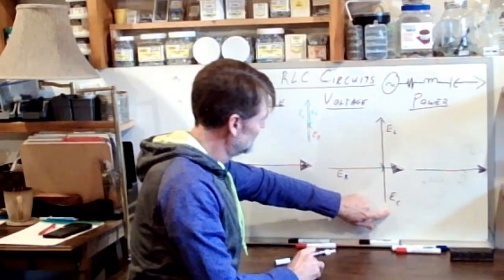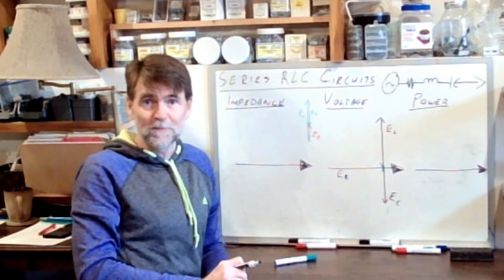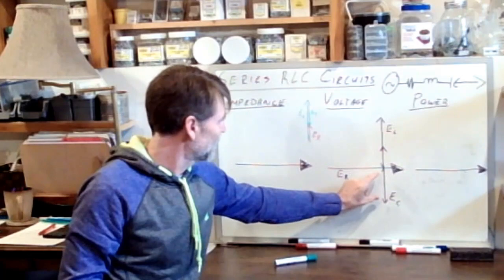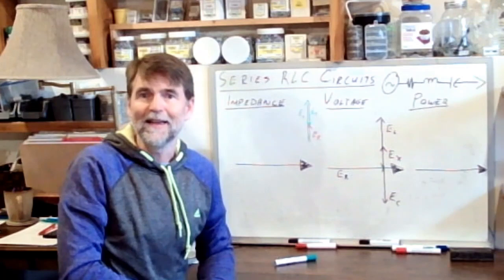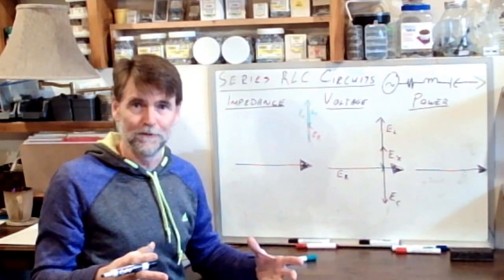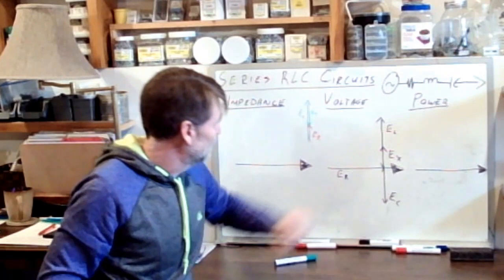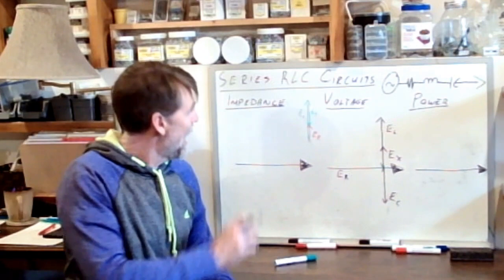I'm going to suggest that EL is greater than EC, let's shorten that vector just a little bit so this becomes obvious. And I'm going to suggest that once we subtract this voltage vector from this voltage vector, we're left with this voltage vector, and what I'm going to call it is EX, E reactive. That is the voltage dropped across all of the reactive loads, both the inductor and the capacitor combined together to give us this value of EX, E reactive.